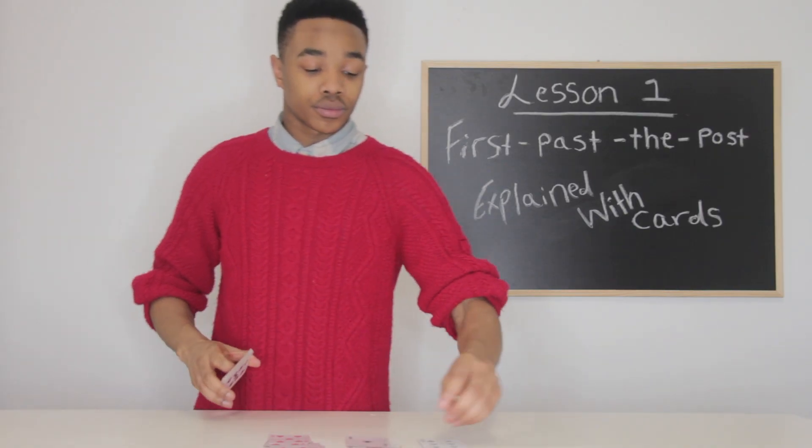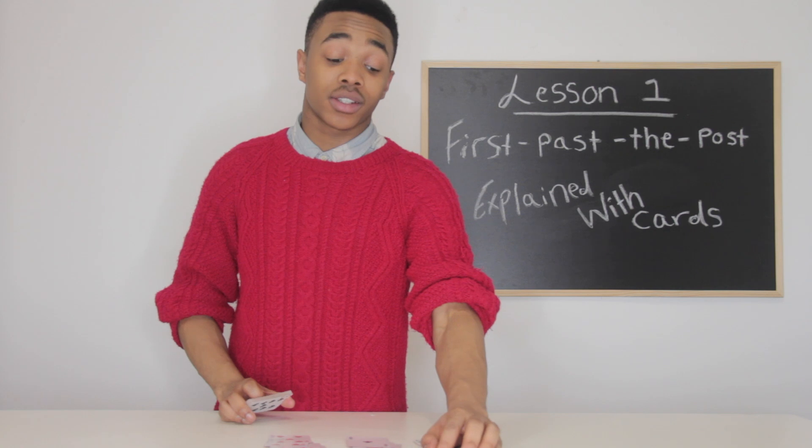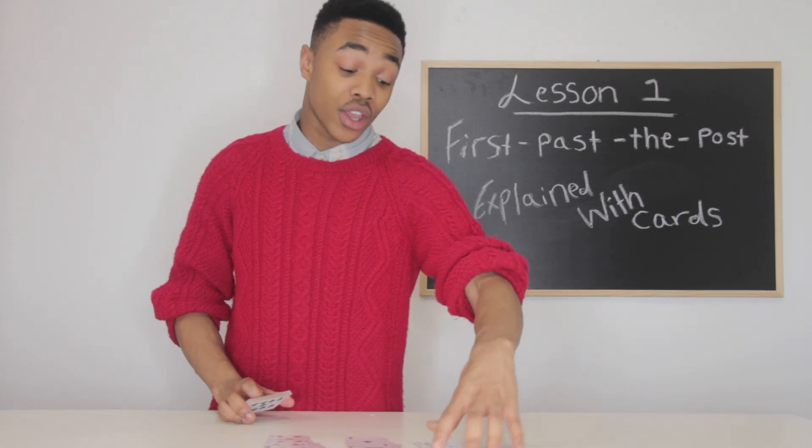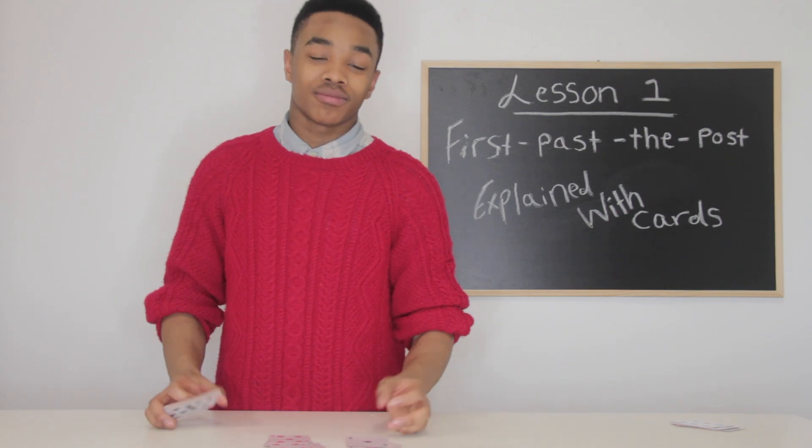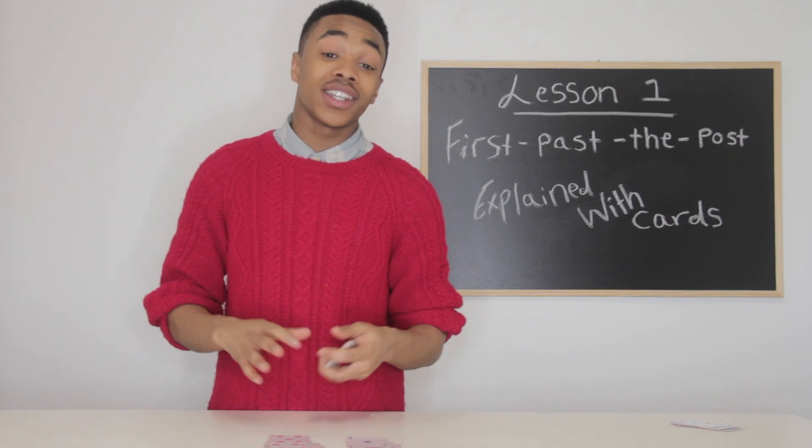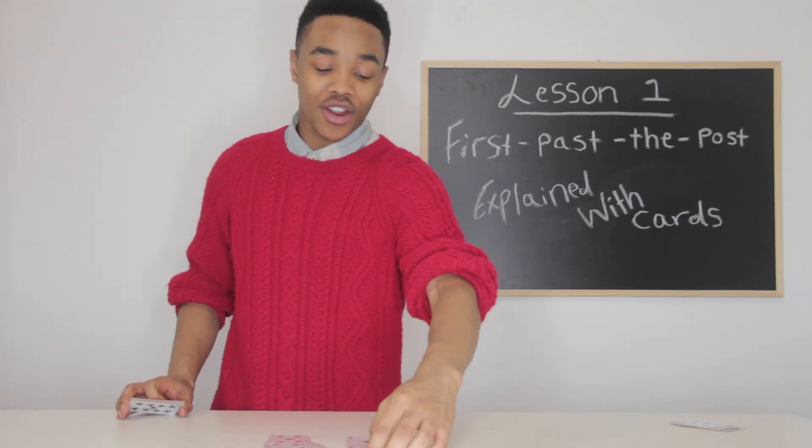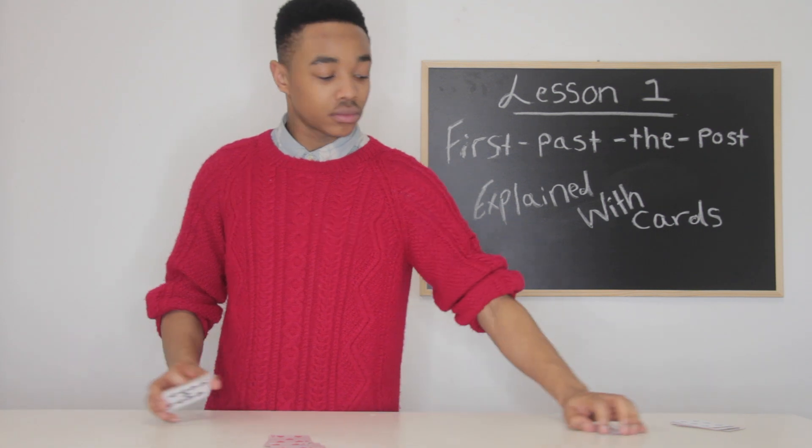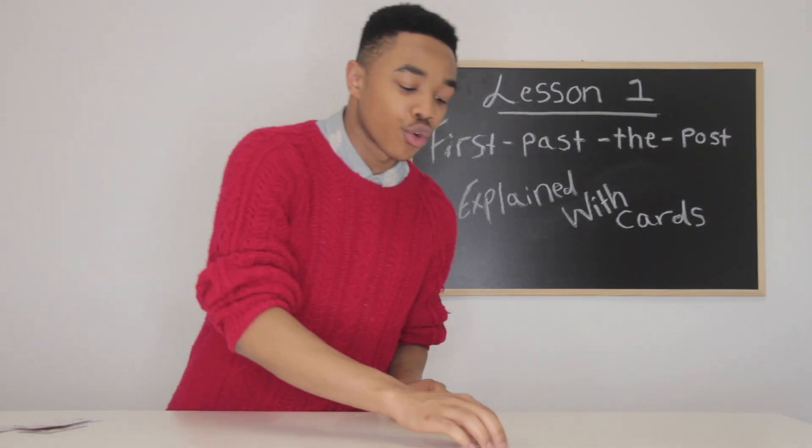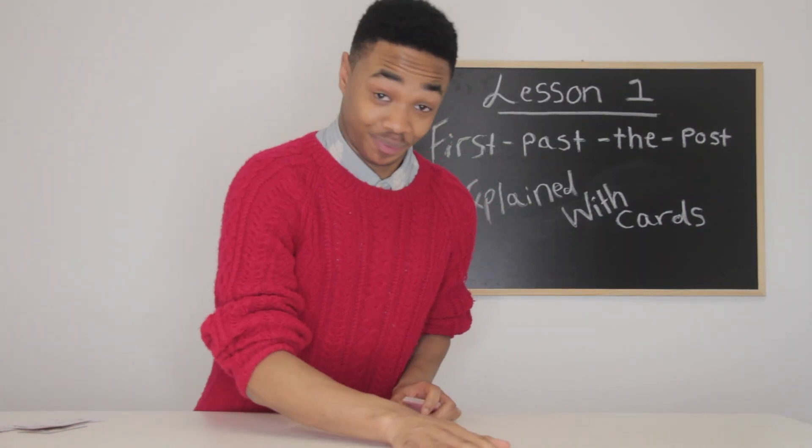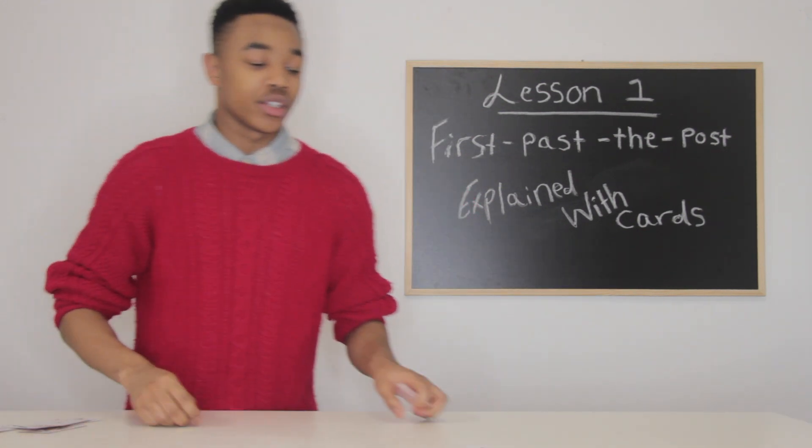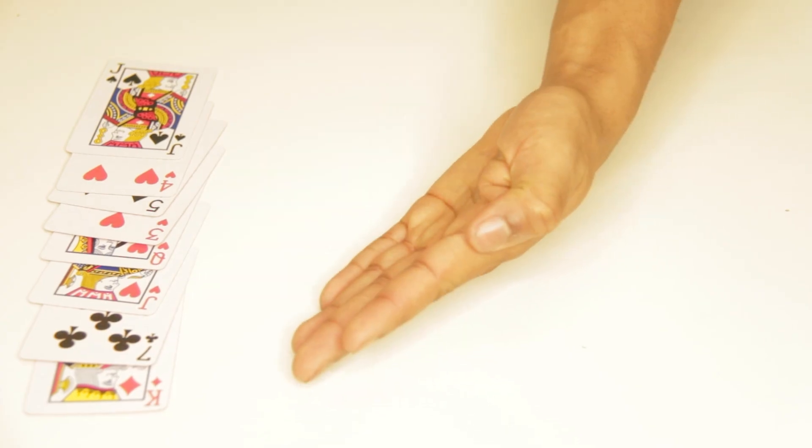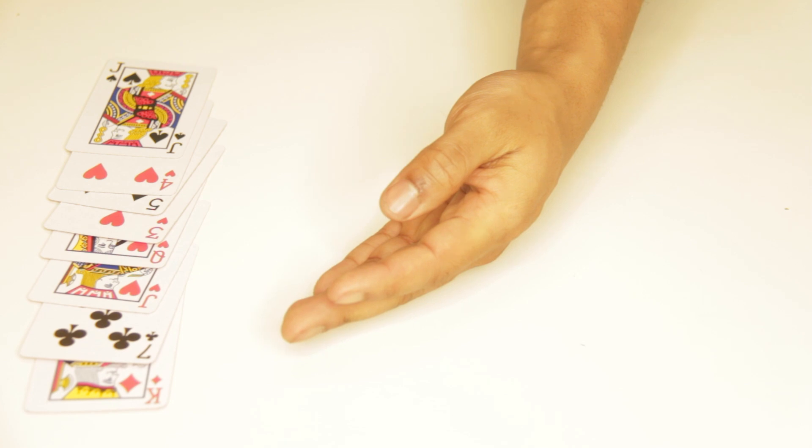So overall, unfortunately for the Liberal Democrats, they didn't win because they received four votes. So they're out. Steve was really close, but unfortunately didn't win. So they're out. Which means overall, Rob here has won his seat, which brings us to the next round.